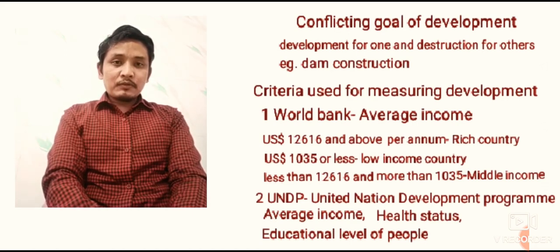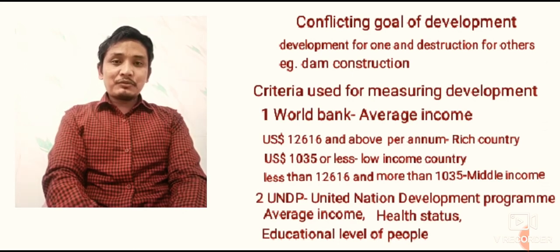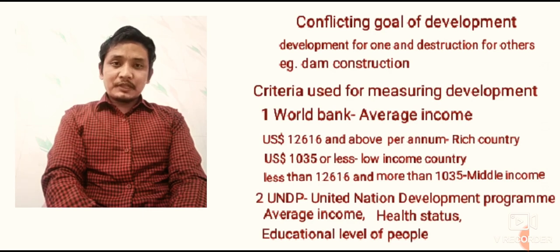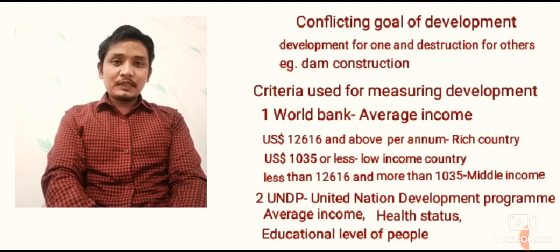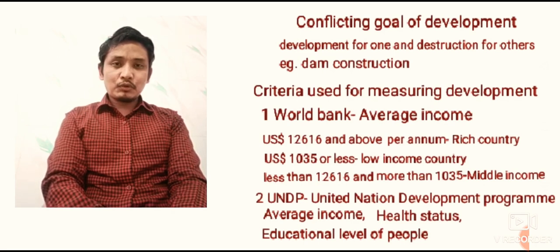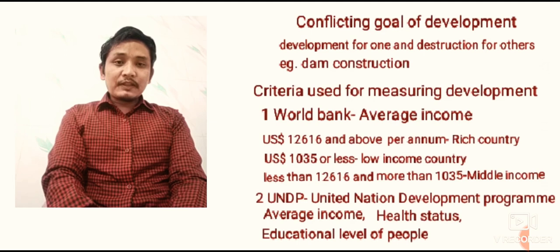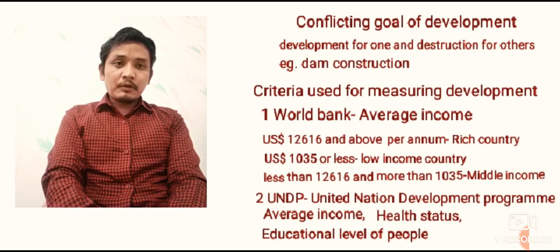Number one: World Bank. World Bank bhi different countries ko measure karta hai ki wo developed hai, developing hai, ya underdeveloped hai. The World Bank uses only one criteria — that is average income, also called per capita income. Per capita income is: total income of a country divided by total population of the country.